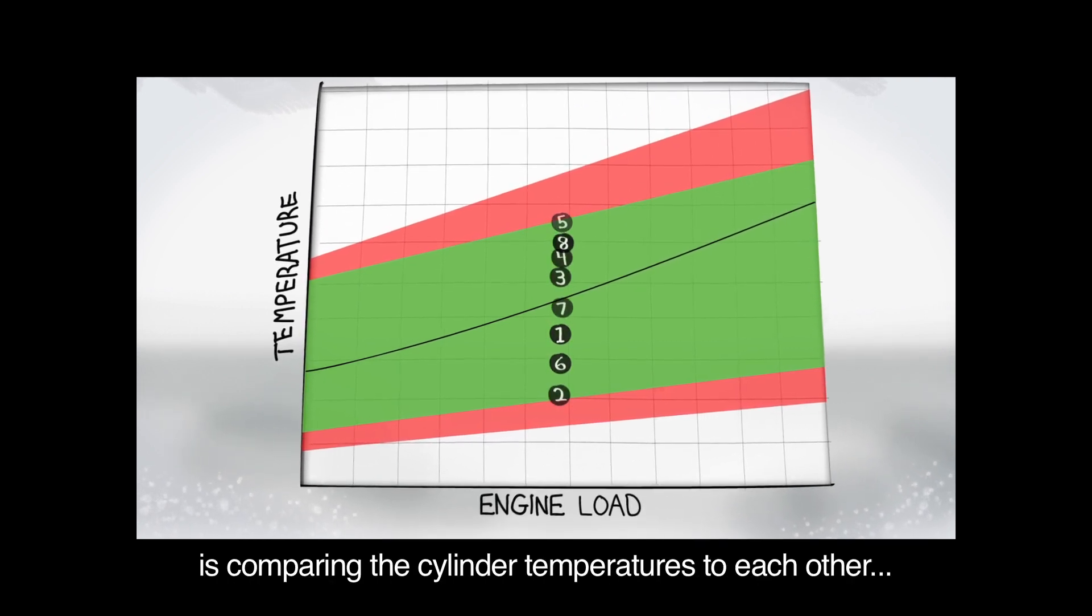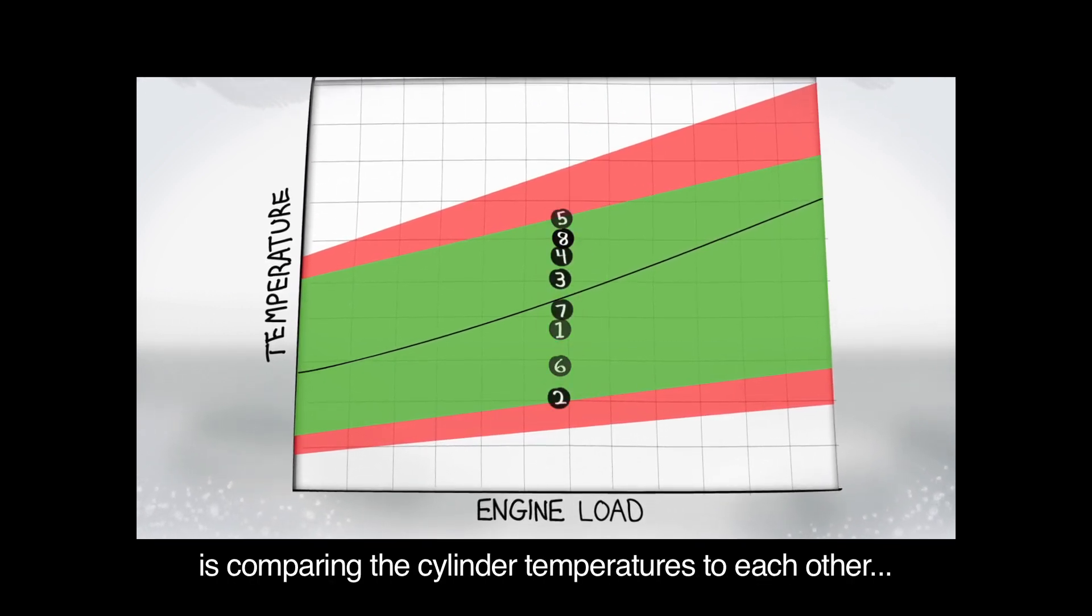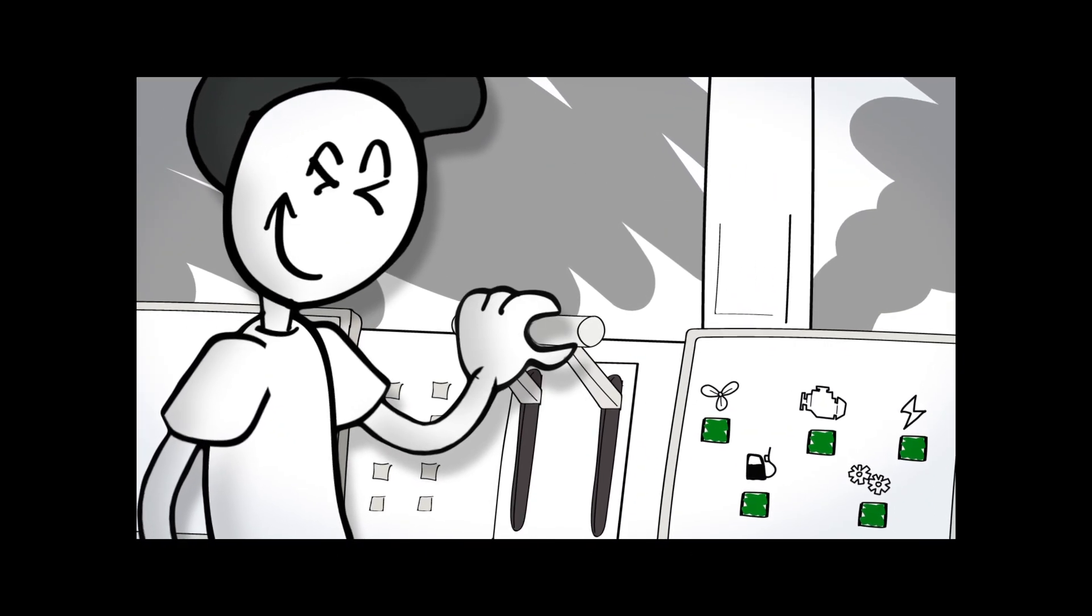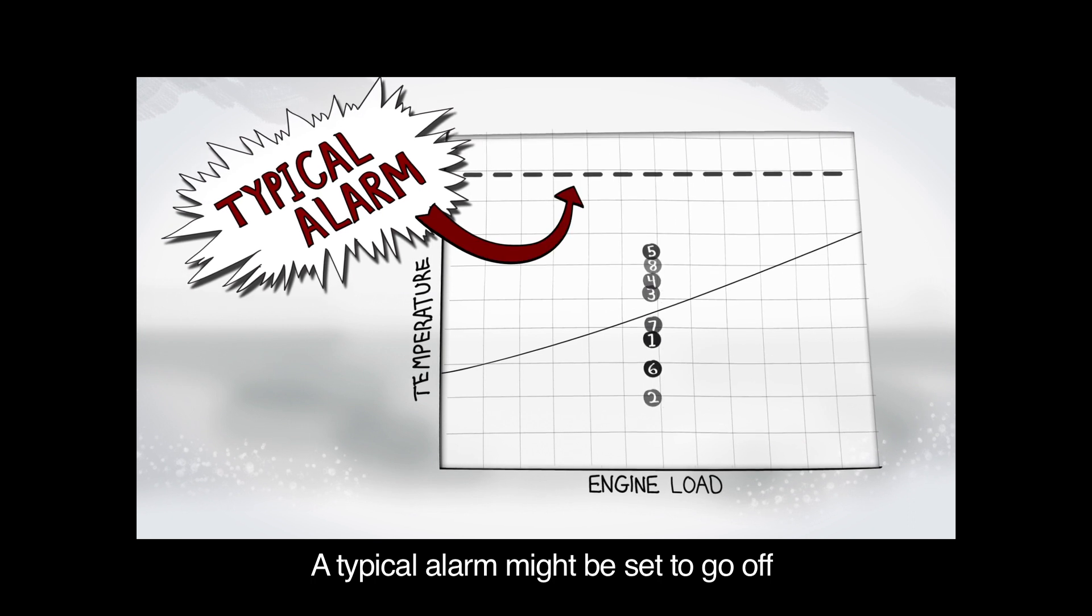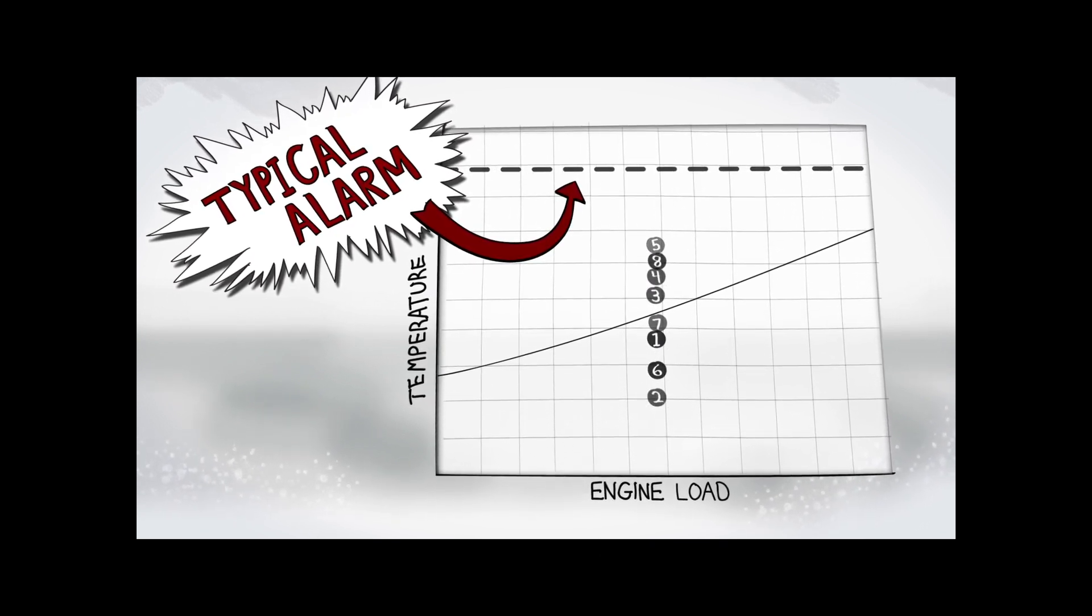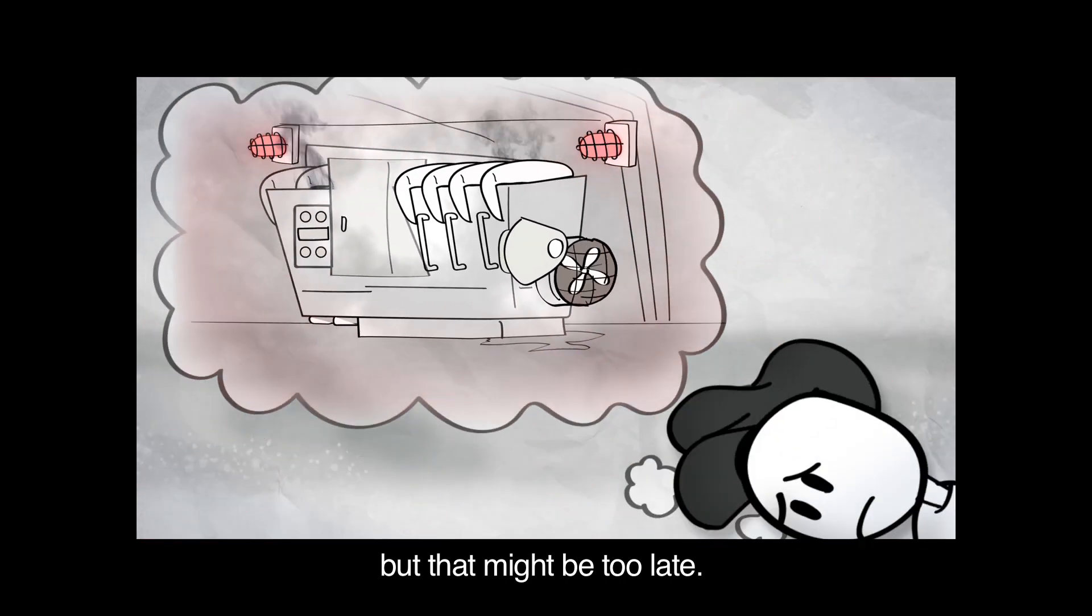CAT Asset Intelligence is comparing the cylinder temperatures to each other and taking into account how Bob is working the engine. A typical alarm might be set to go off when the cylinders reach a high temperature. But that might be too late.